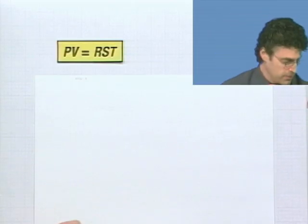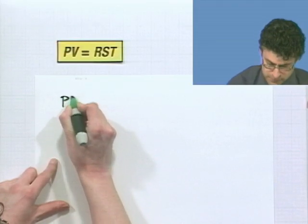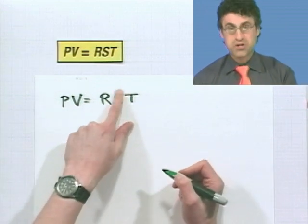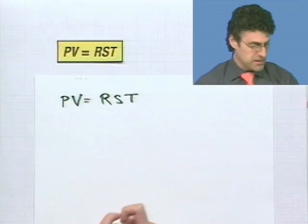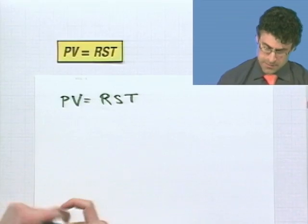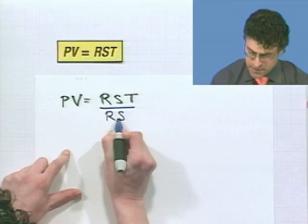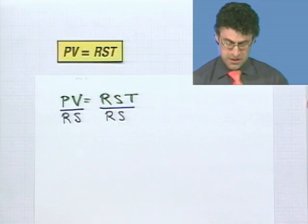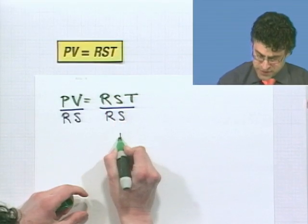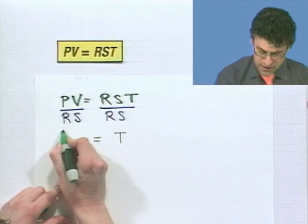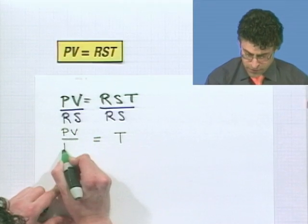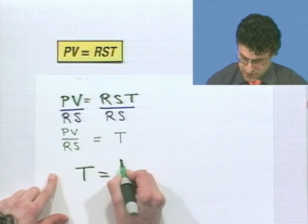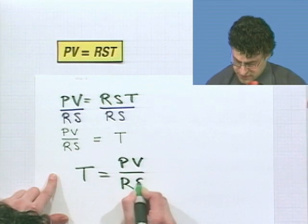So if I start off with pv equals rst, if I want to undo the multiplication by rs, the product of those two things, I'll just divide both sides by rs. You could divide by r, then divide by s, do it a la carte, and then you actually have a two-step equation. But magically, I'm going to do it as a one-step equation because now when I divide by rs, I'm just left with t on the right, and on the left, I'm left with pv over rs. And that's the answer. That's what t equals. If you like to write it the other way, t equals pv over rs. Doesn't make a difference how you look at it.